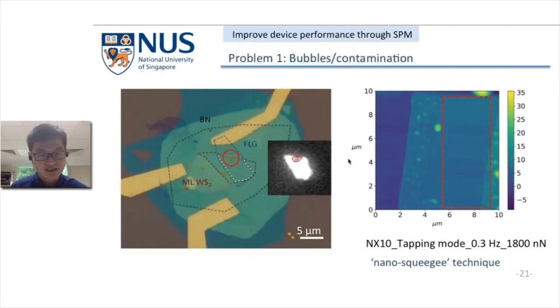Lastly, I'd like to mention that we can improve device performance and characterize the device using scanning probe microscopy techniques. First, when we do the transfer, sometimes it's unavoidable to find some bubbles or contaminations in the heterostructure region, which blocks the light from the device. We found that if we use the AFM tip to scan the sample, for example this red square is the scanned area, the contamination can be removed if we adjust the parameters carefully. This is the so-called nano-squeegeeing technique.